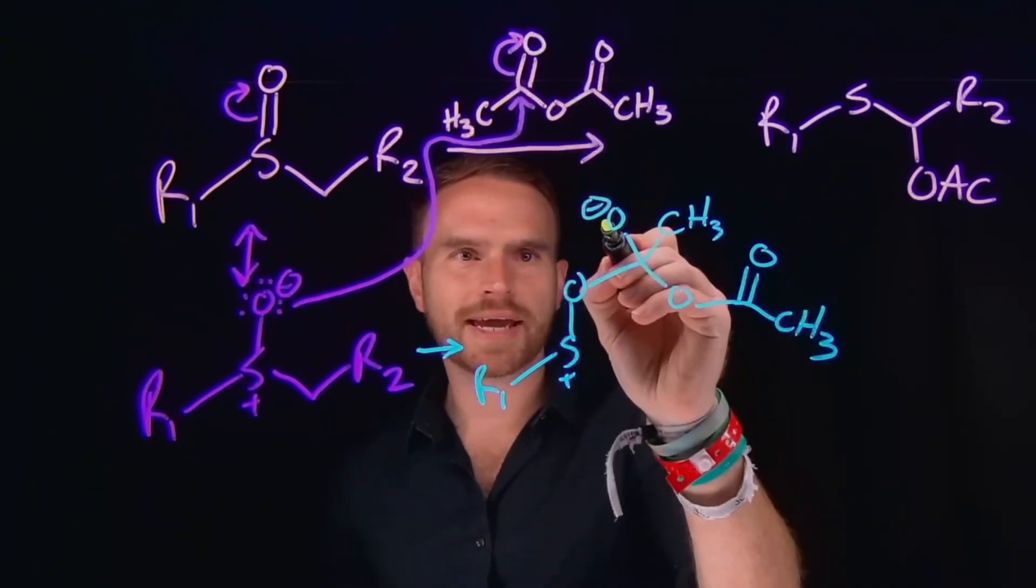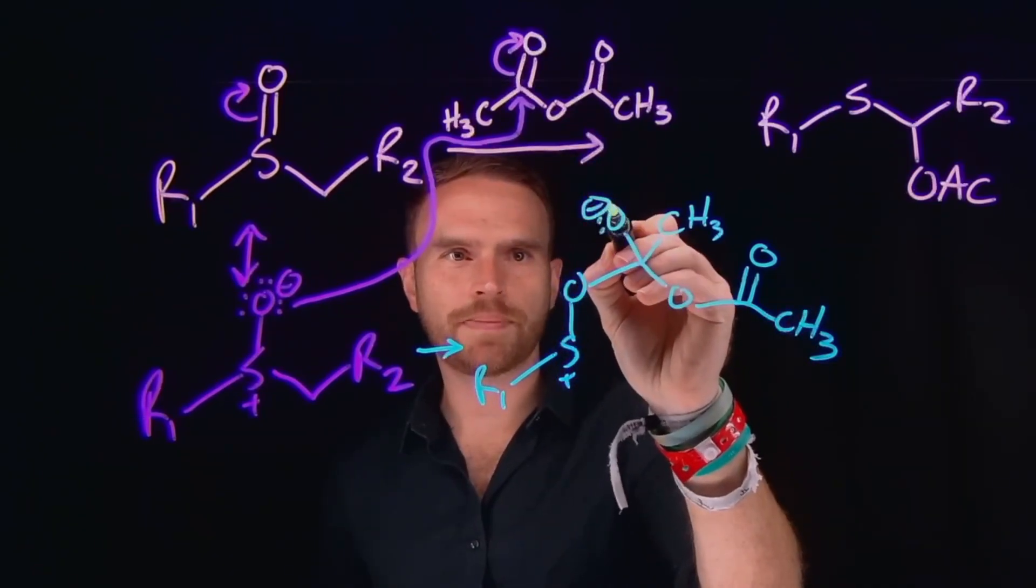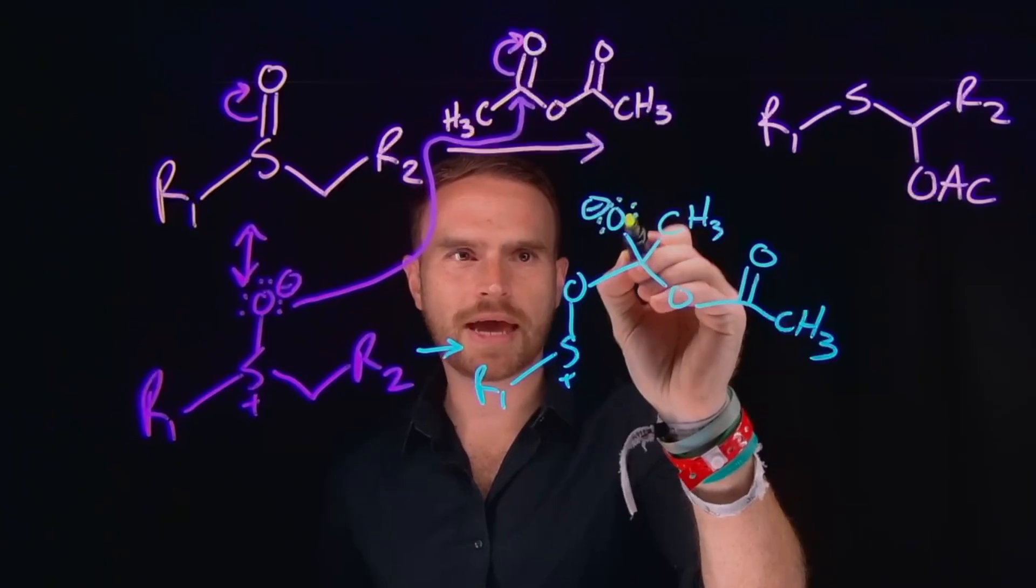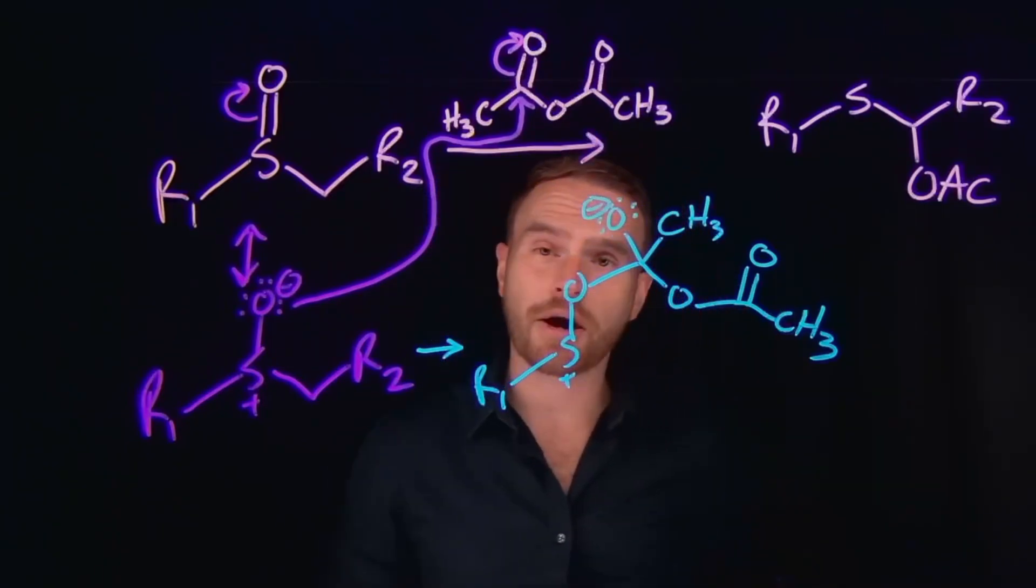And remember, this negatively charged oxygen has three lone pairs on it. And what that means is that we have an opportunity for those electrons to come back down and kick off a really great leaving group, which is why anhydrides are so useful and so reactive.